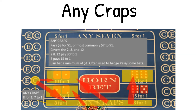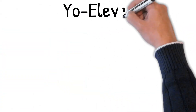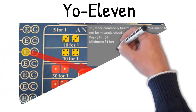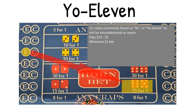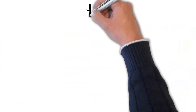Eleven — more commonly heard as yo or yo-eleven, to not be misunderstood as seven. Costs one dollar. Pays fifteen dollars for every one dollar. It's a minimum one dollar bet.